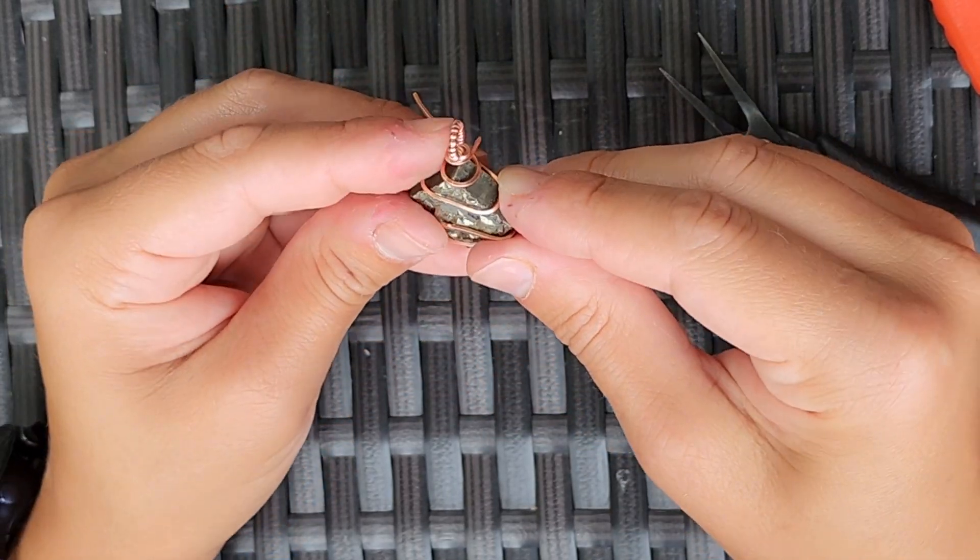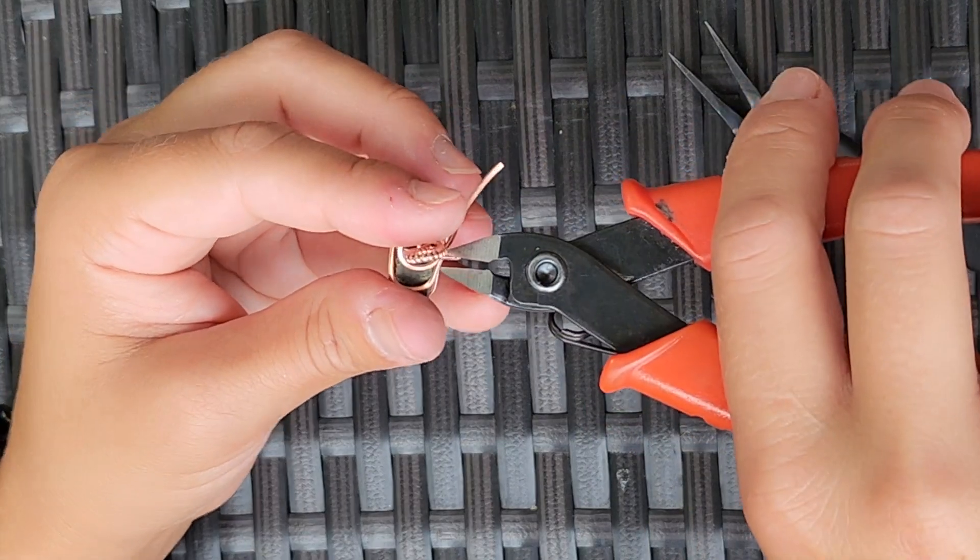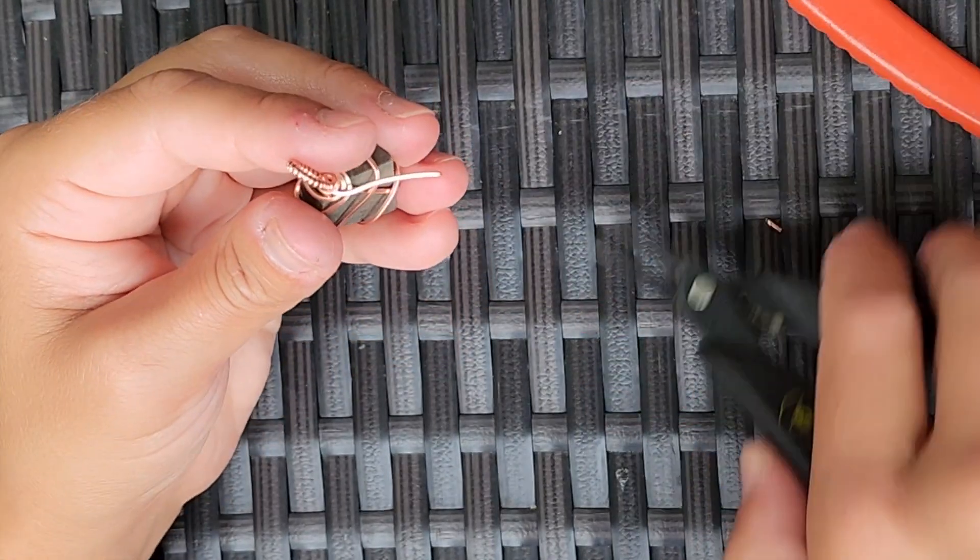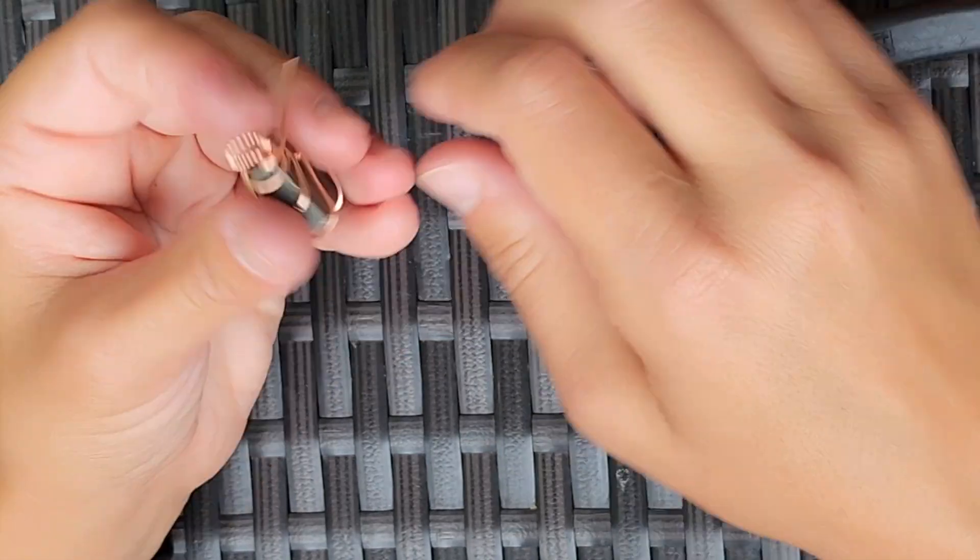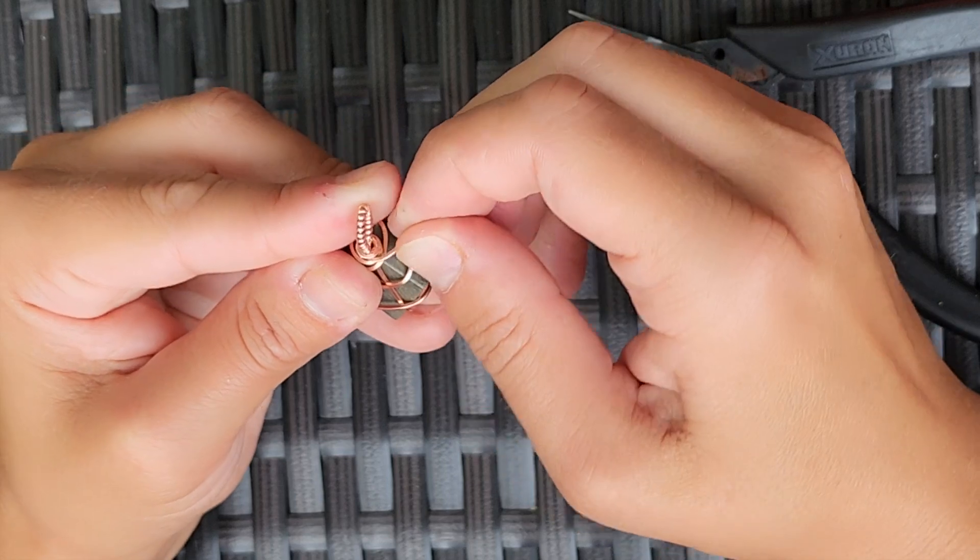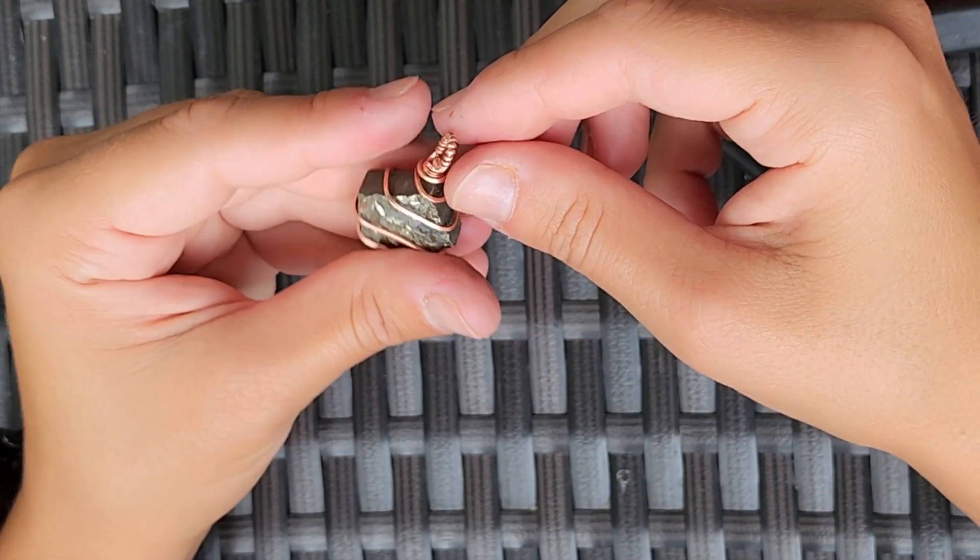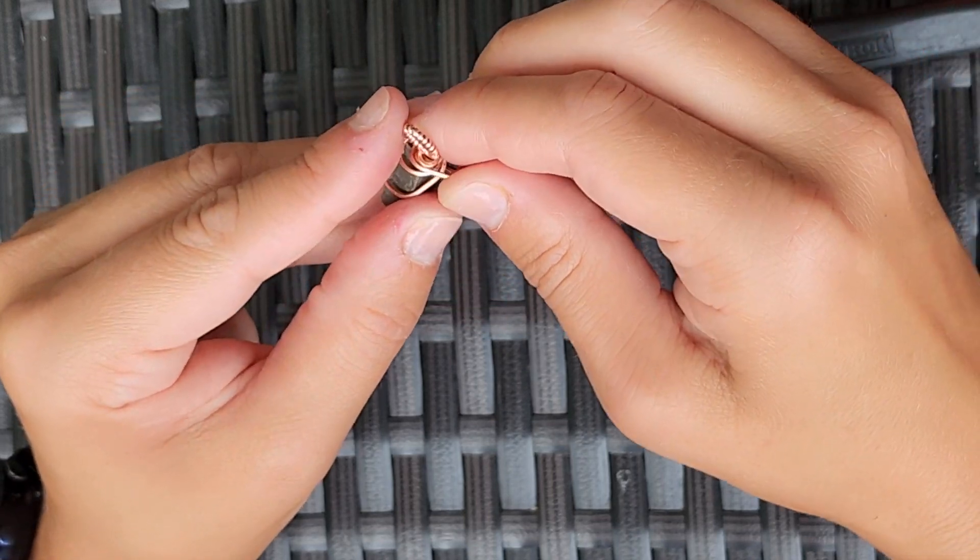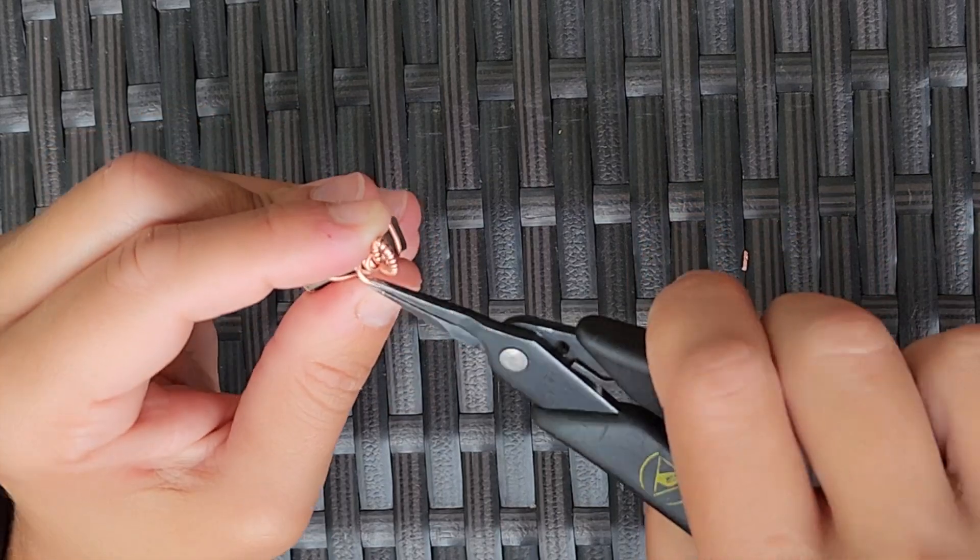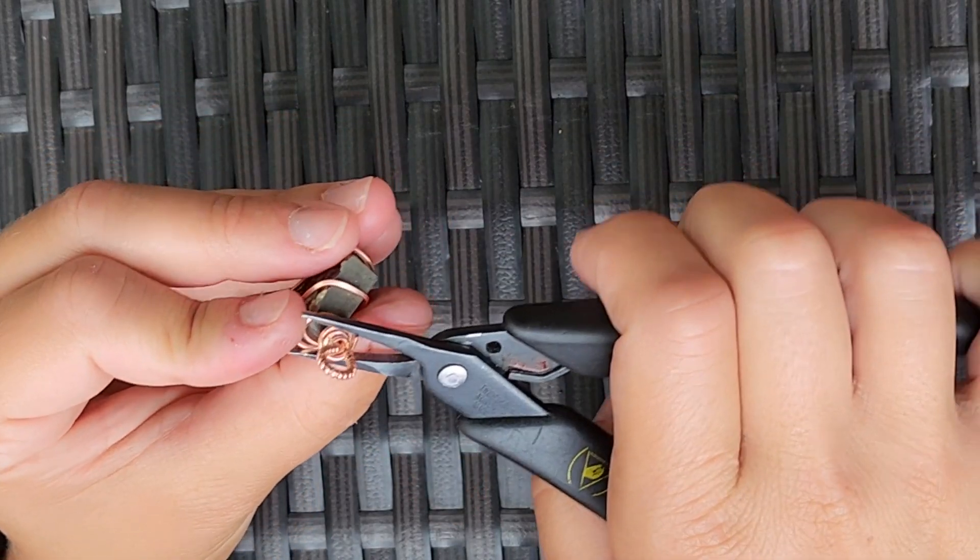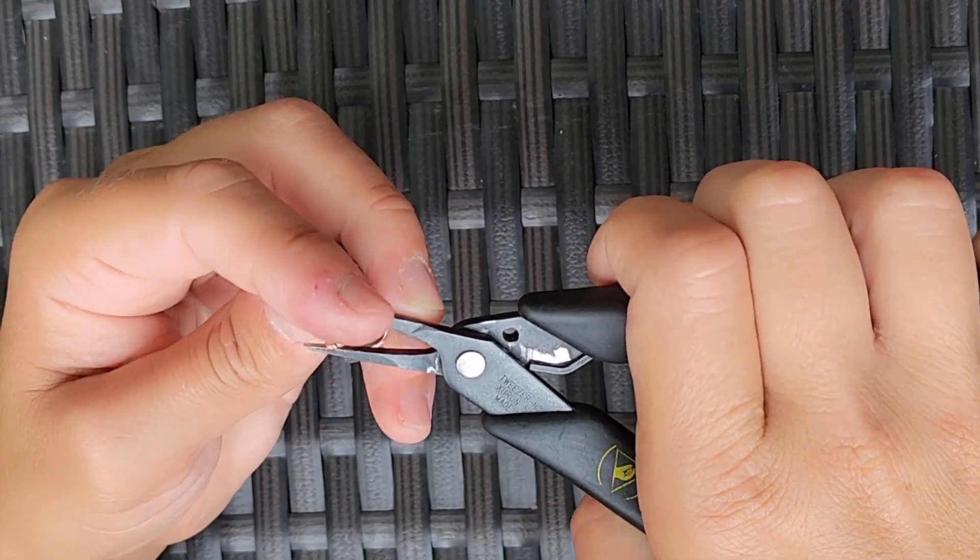Once it's pretty much all wrapped up, I can then grab my cutters and cut off the little end of it and then I'll use my pliers to tuck it in. Now we can secure the wrap with this extra piece of wire we had hanging out there. Go ahead and wrap it around the other wire and then you will also cut it off so that it might end, or you can cut it off so that it's ending at the back of the stone and then you can tuck that in as well.